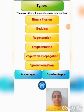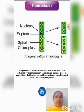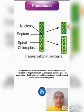Now, let us observe another type of asexual reproduction: fragmentation. Fragmentation is a mode of asexual reproduction exhibited by organisms such as spirogyra and planaria. The parent body divides into several fragments, and each fragment develops into a new organism. In this picture, you are observing fragmentation in spirogyra — the spirogyra divides into fragments, and each fragment develops into a new individual.